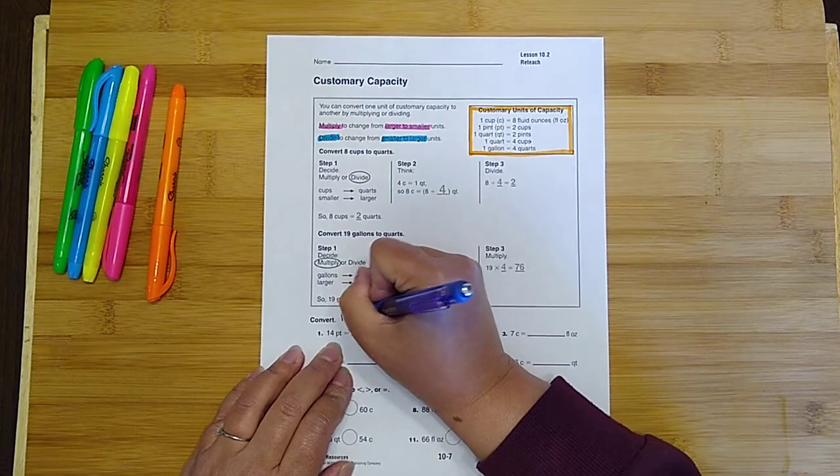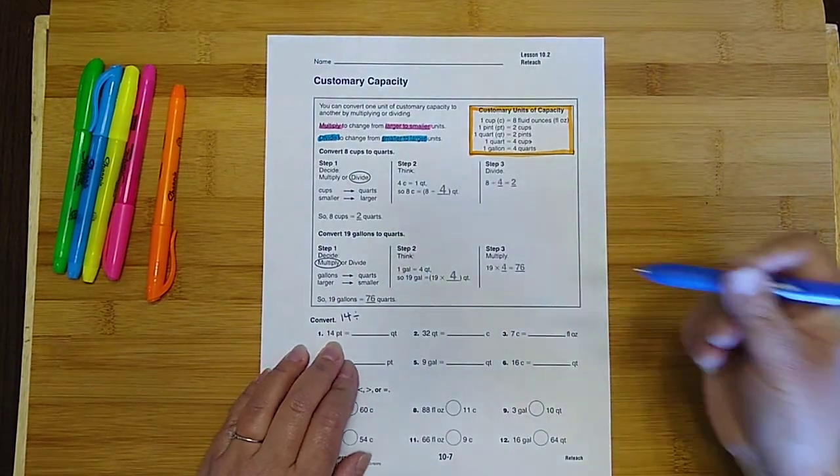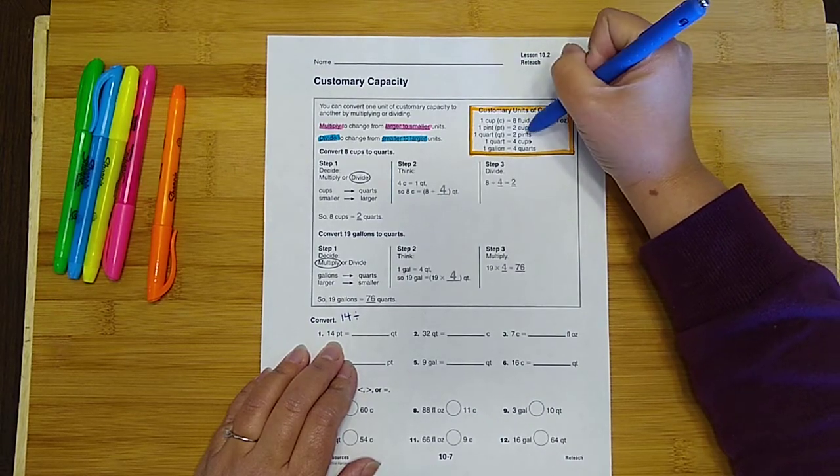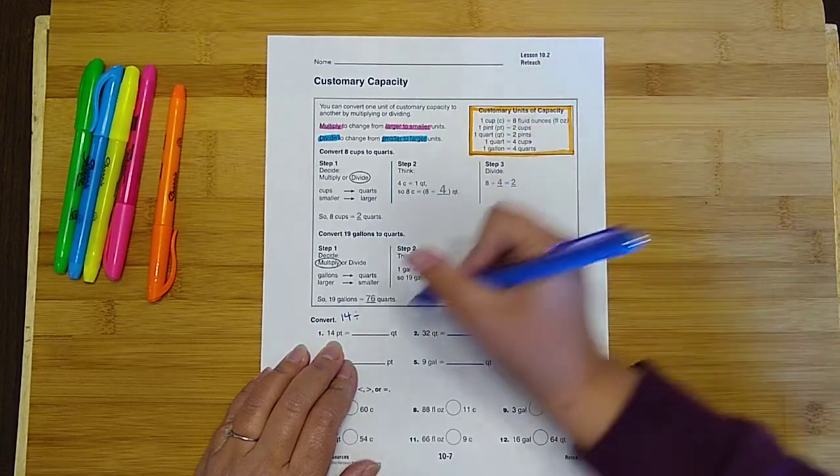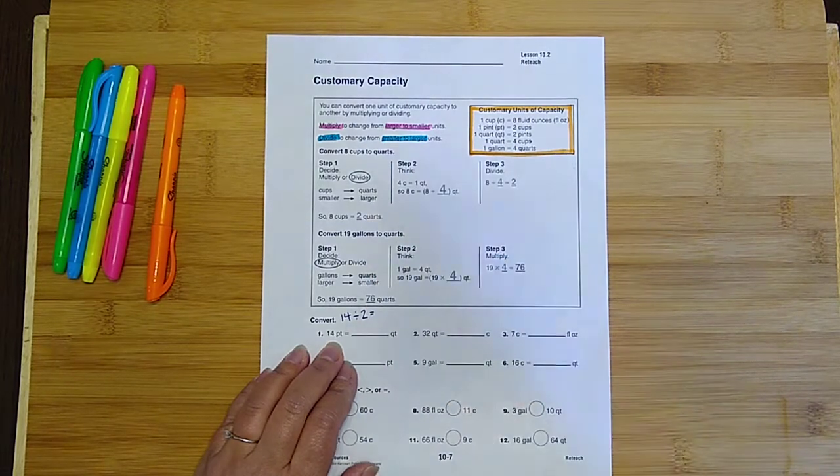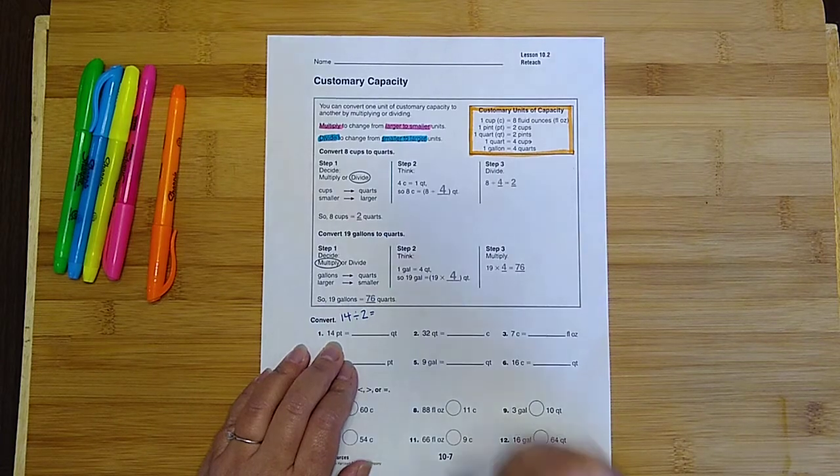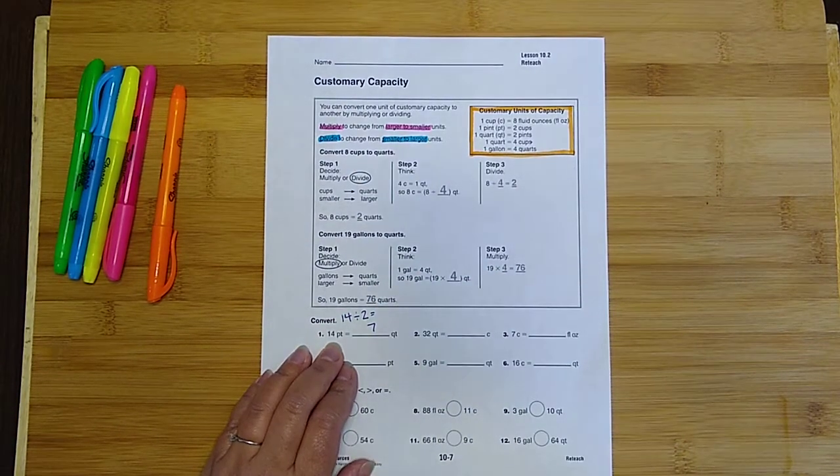So we're going to do 14 divided by, and how many pints are in a quart? Look up here at our chart. There are two pints in one quart, so we're going to divide by 2. 14 divided by 2. Can you do that math in your head? I bet you can. It is 7. Good.